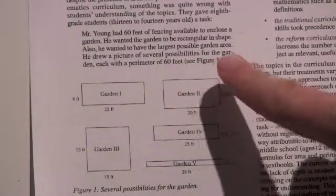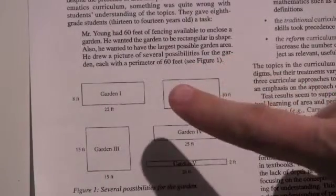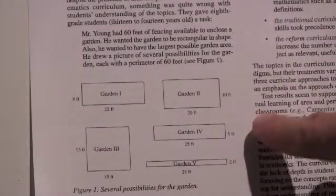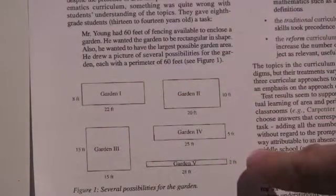Also he wanted to have the largest possible garden area. He drew a picture of several possibilities for the garden, each with a perimeter of 60 feet. See the figure? Can you see that?